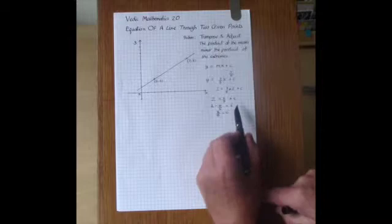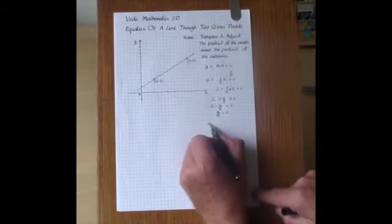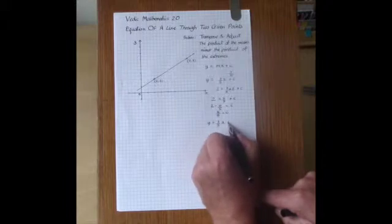And then substitute that back into the equation to give Y equals 3 fifths X plus 4 fifths.